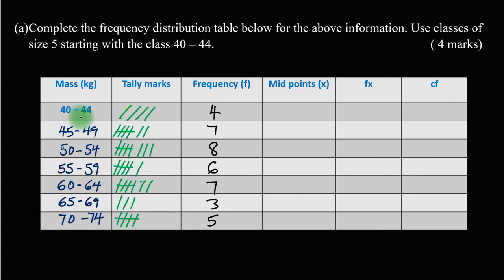For midpoints: 44 plus 40 divided by 2 gives 42. Then 49 plus 45 divided by 2 gives 47. 50 plus 54 divided by 2 gives 52. 55 plus 59 divided by 2 gives 57. 60 plus 64 divided by 2 gives 62. 65 plus 69 divided by 2 gives 67. And 70 plus 74 divided by 2 gives 72.